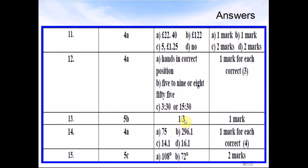Question 13: A third. Question 14: A was 75. B was 296.1. C was 4.1.